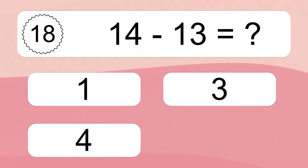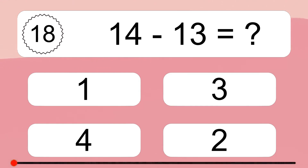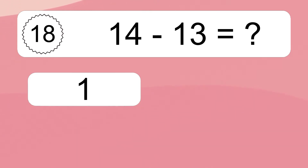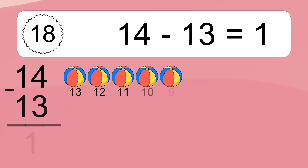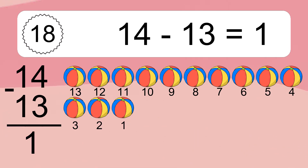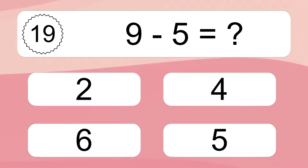14 minus 13 equals what? 14 minus 13 equals 1. Let's count it: 13, 12, 11, 10, 9, 8, 7, 6, 5, 4, 3, 2, 1.